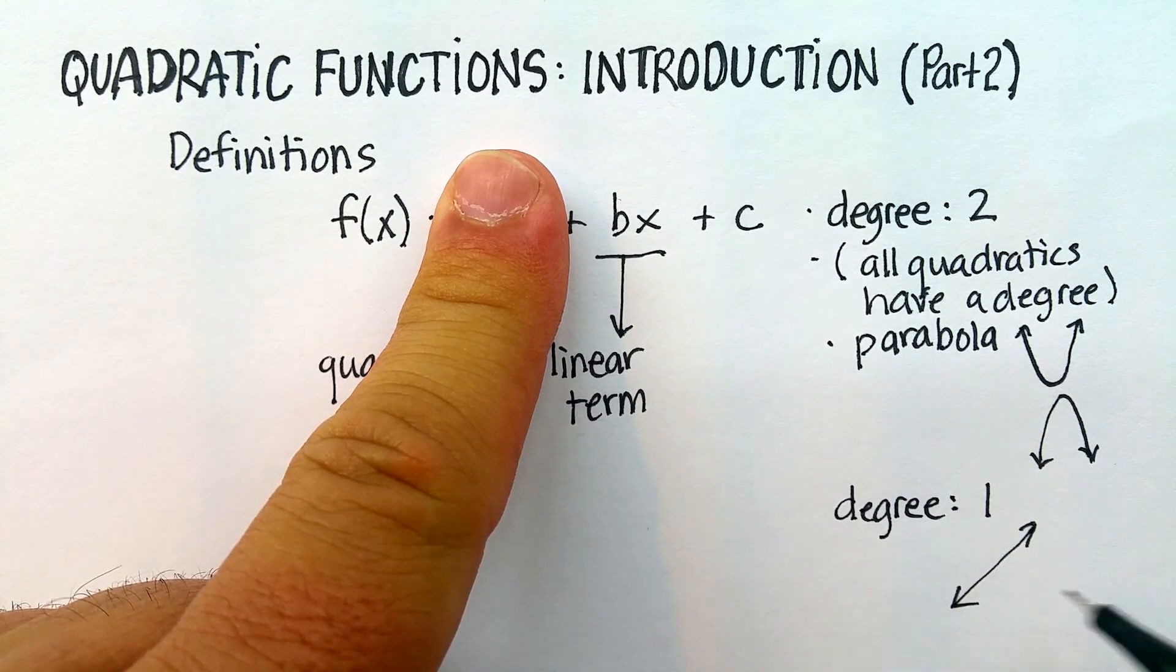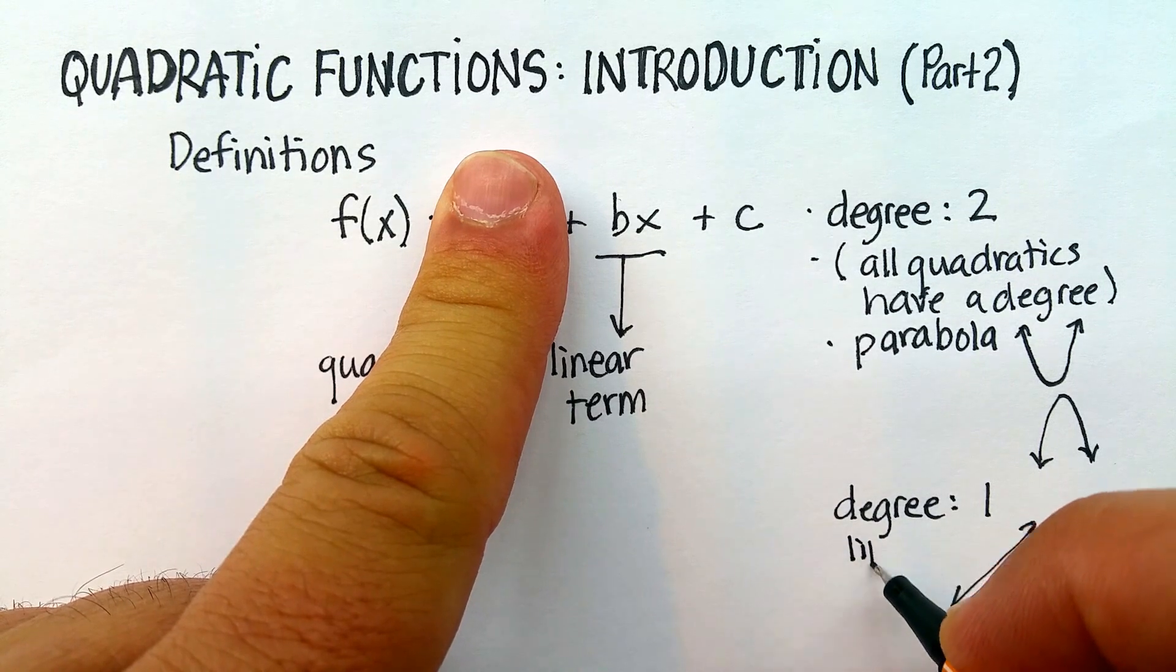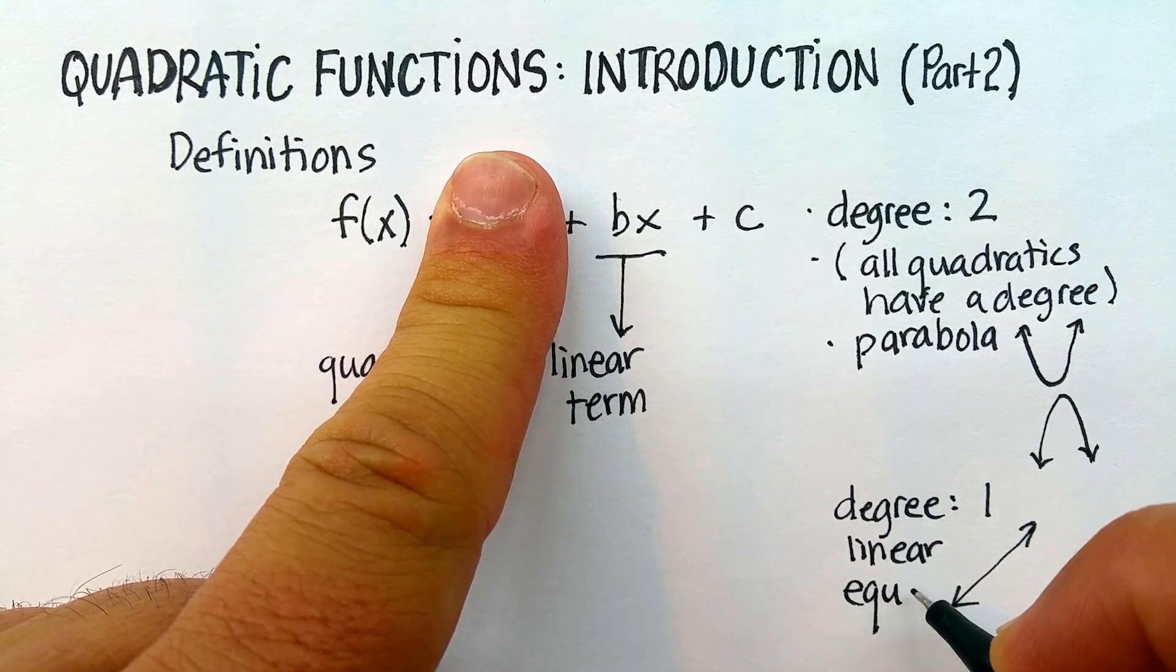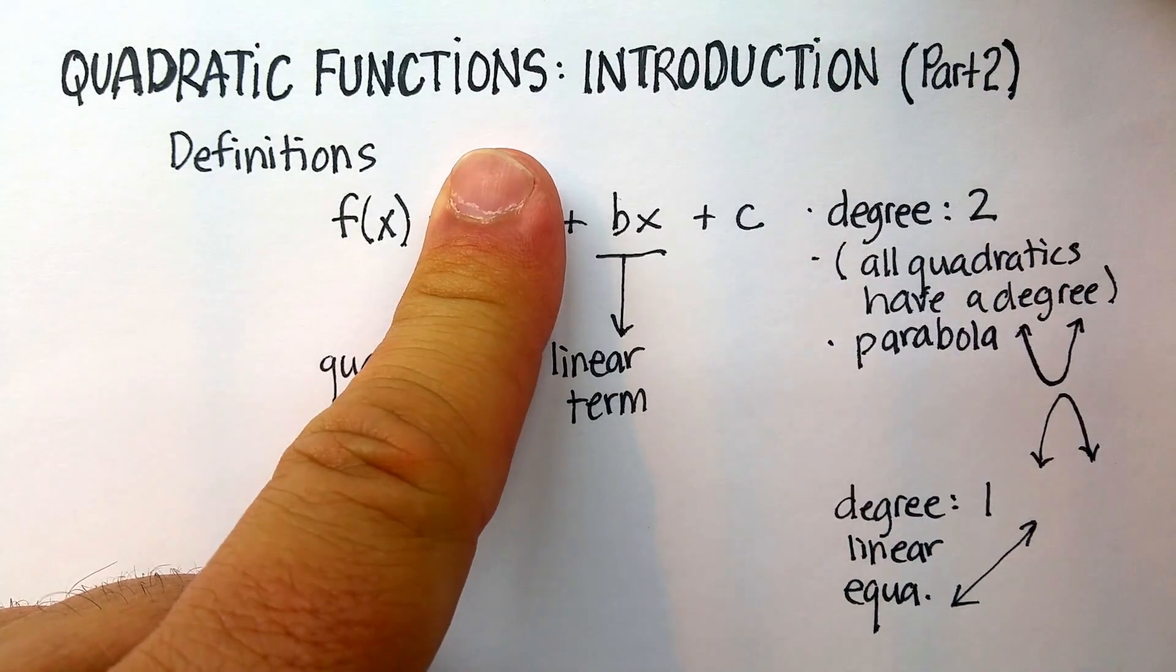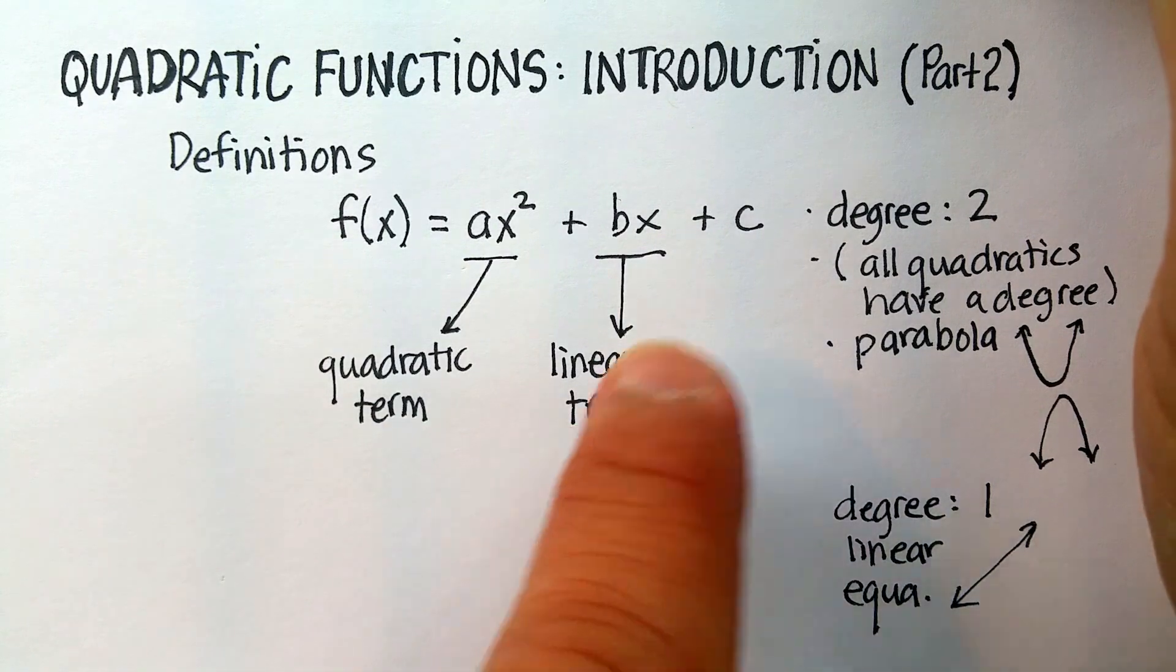Again, either up and down, or sideways, or flat, or whatever it might be. But the degree is one, and these were called, again, linear equations. And I'll just abbreviate there. So, this term is rightfully called the linear term.